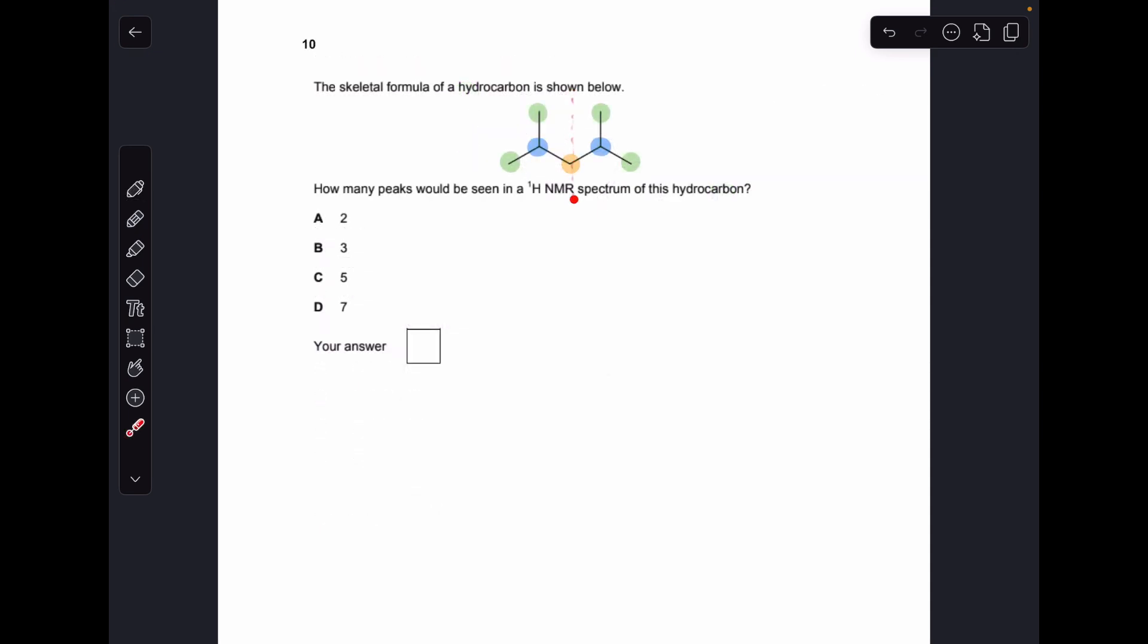Number 10, so we've got a line of symmetry here, so that means these green proton environments are all the same, the blue ones are, and the orange one's unique, so three there, so the answer was B.